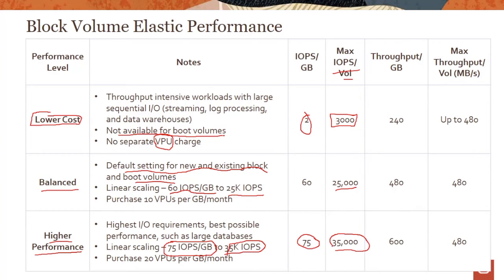The lower cost tier gives you 2 IOPS per GB up to 3,000 IOPS per volume. Importantly, this tier is not available for boot volumes, since booting requires higher performance. There is no separate VPU charge for the lowest tier, but for balanced you buy 10 VPUs per GB per month, and for higher performance you buy 20 VPUs per GB per month.